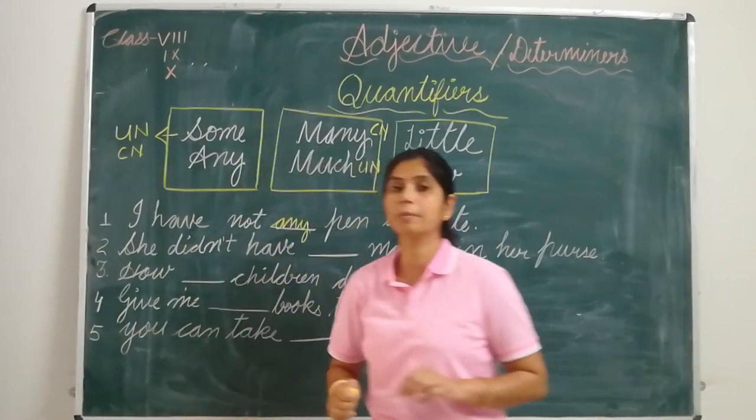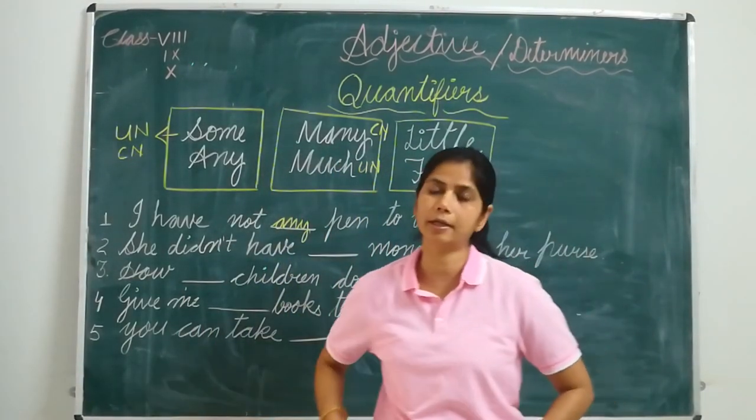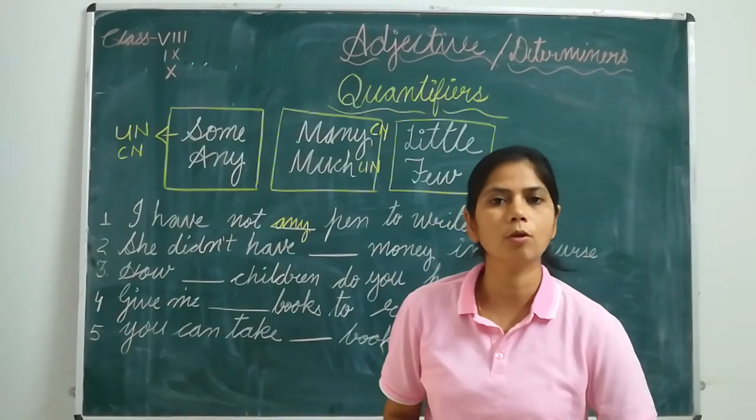What are countable and uncountable nouns? This must be clear in your mind. Countable nouns are those you can count as 1, 2, 3.